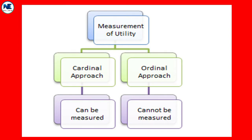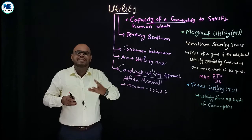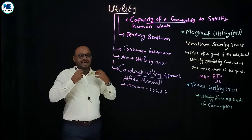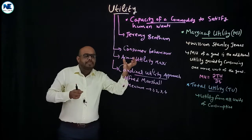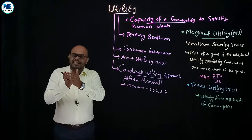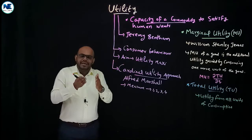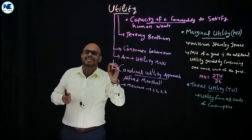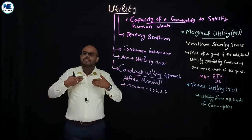For example, suppose I have apple juice — I derive 10 utils of utility from it. And suppose I have orange juice — I derive 5 utils. So apple juice gives me total utility of 10 utils, which is double that from orange juice. This is how you can measure utility under the cardinal approach.